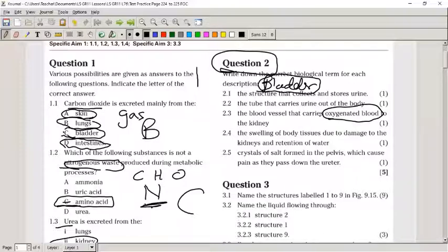2.3: The blood vessel that carries oxygenated blood to the kidney. The moment you have oxygenated blood, in most cases that's going to be an artery. If it's deoxygenated blood, it's going to be a vein in most cases. In terms of the lungs, that's different - it turns around because it goes and fetches oxygen. This will be the renal artery. 2.4: The swelling of body tissue due to the damage of the kidneys and retention of water is edema.